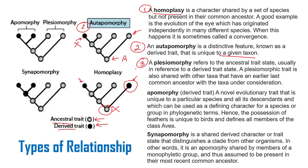Plesiomorphy refers to an ancestral trait, usually in reference to a derived trait. A plesiomorphic trait is shared with other taxa that have an earlier last common ancestor with the taxa under consideration. In the example of plesiomorphy, the ancestral state — the gray color — is shared by species X and Y as well, meaning both carry the ancestral trait. So plesiomorphy is a shared ancestral character.